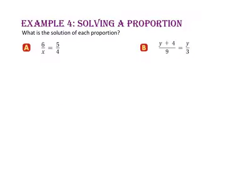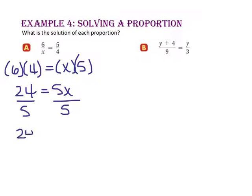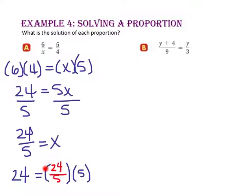In example 4, we will solve proportions. What is the solution of each proportion? In part A, let's use the cross product property to multiply the extremes, 6 times 4, and set that equal to the product of the means, x times 5. So 24 will equal 5x. Divide both sides by 5, and 24 over 5 will equal x. To check, let's plug in 24 over 5 for x and make sure that our equation is correct. Since 24 over 5 times 5 does equal 24, we know we are correct.